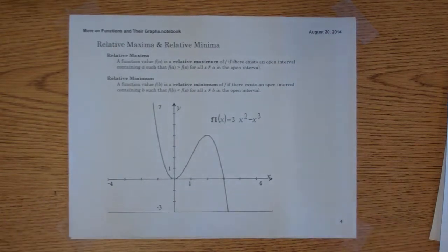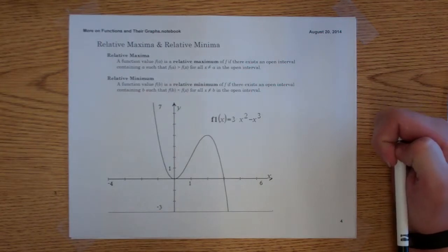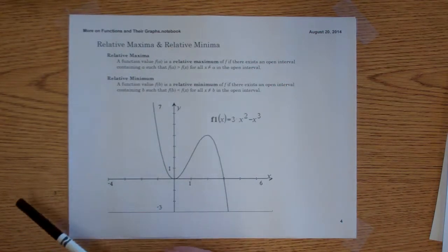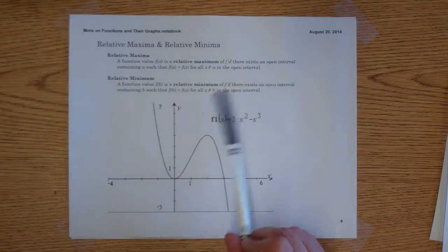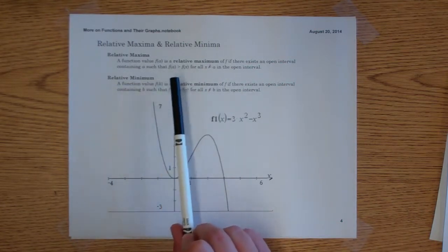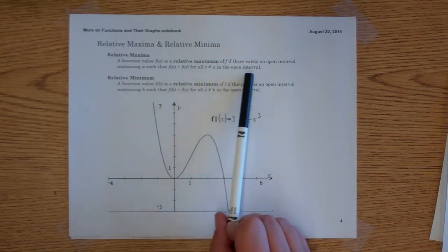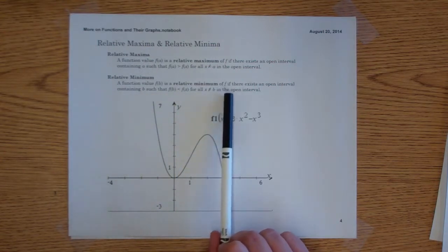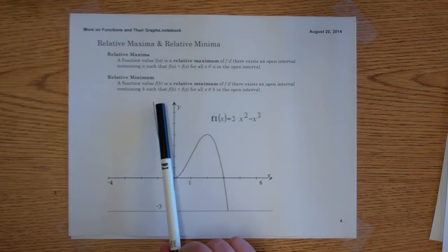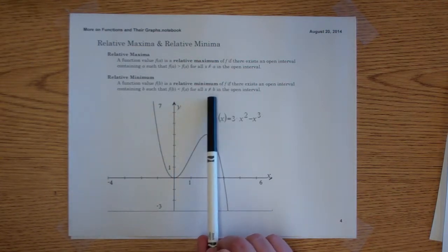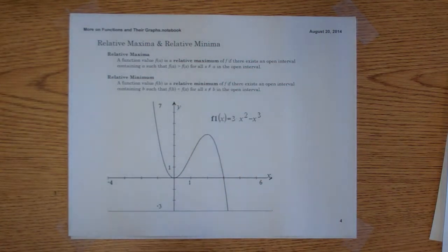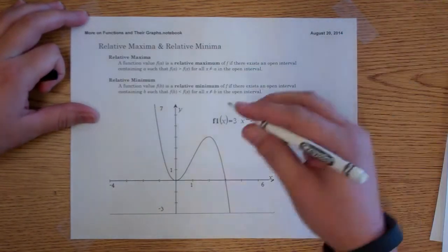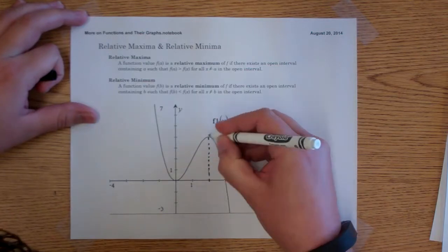Now let's look at relative maxima and relative minima. The formal definition: a function value f(a) is a relative maximum of f if there exists an open interval containing a such that f(a) is greater than f(x) for all x not equal to a in that open interval. A function value f(b) is a relative minimum if there exists an open interval containing b such that f(b) is less than f(x) for all x not equal to b in the open interval.